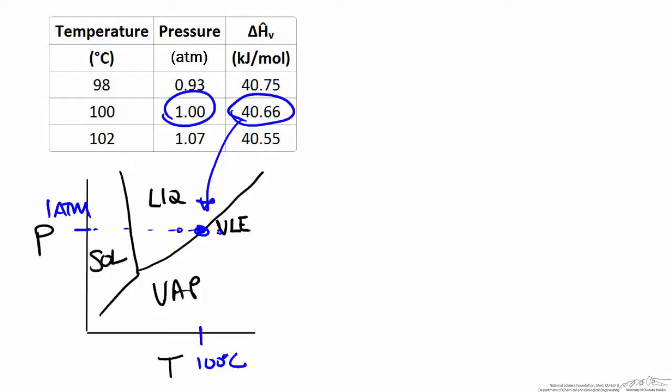For any pressure, not just one atmosphere, there is only one temperature at which the phase change occurs — true for water and any pure species. Along the vapor-liquid equilibrium line, temperature and pressure are not independent: if you specify the temperature at which the phase change occurs, the pressure is fixed as well. So as we increase the temperature from 100 to 102°C, the pressure changes correspondingly — we are moving up along the vapor-liquid equilibrium curve for that species.